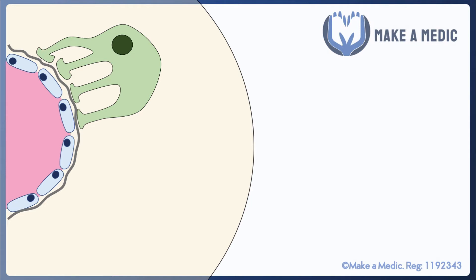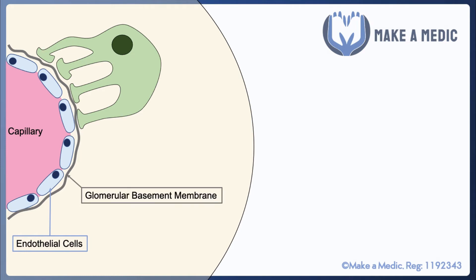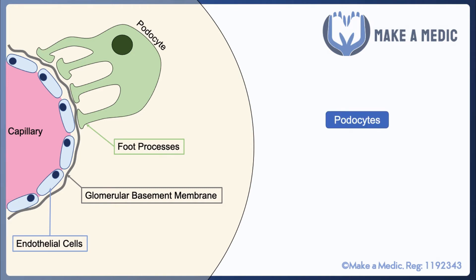Here we have a very simplified diagram in which we have the capillary in pink, we have the endothelial cells around the outside, and then we have the glomerular basement membrane and then we have these cells called podocytes which have foot processes that extend onto the glomerular basement membrane. The podocytes are a very important part of this whole setup because what they do is they prevent protein from entering the filtrate. It's thought that this may be due to the fact that the foot processes compress the basement membrane and allow it to better carry out its function of preventing protein from entering the filtrate.